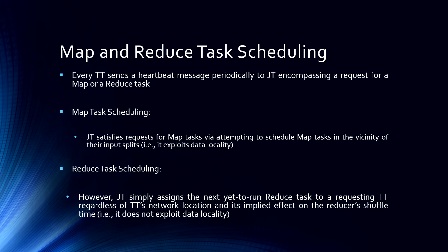For reduce task scheduling, the job tracker simply assigns the next ready-to-run reduce task to a requesting task tracker, regardless of the task tracker's network location and its implied effect on reduced shuffle time. So map tasks try to exploit data locality, while reduce tasks cannot exploit data locality — they have to combine data from multiple sources.